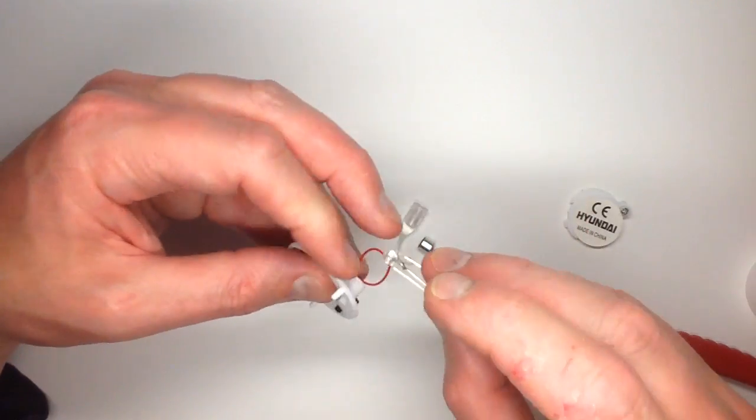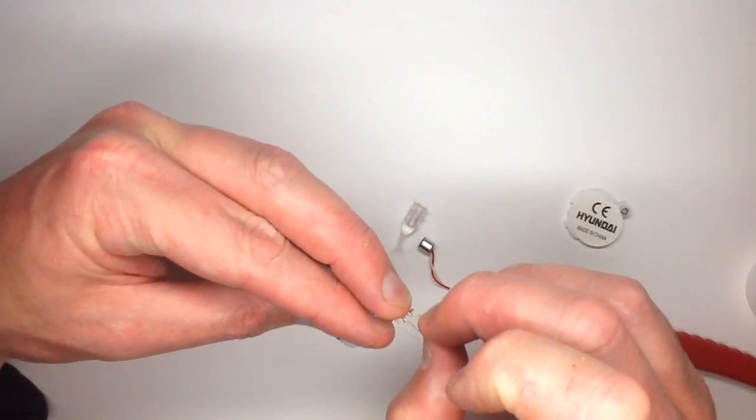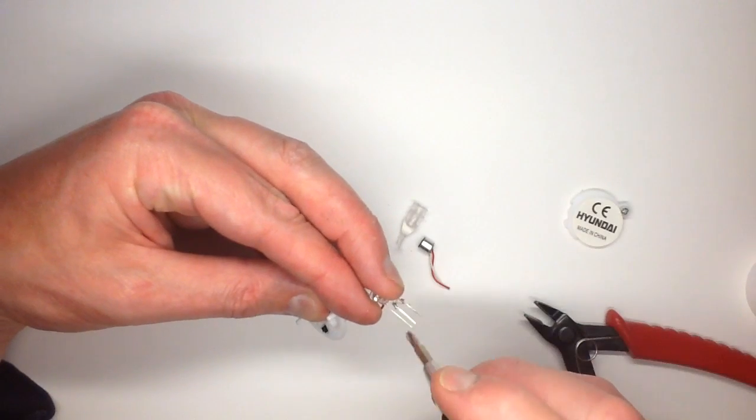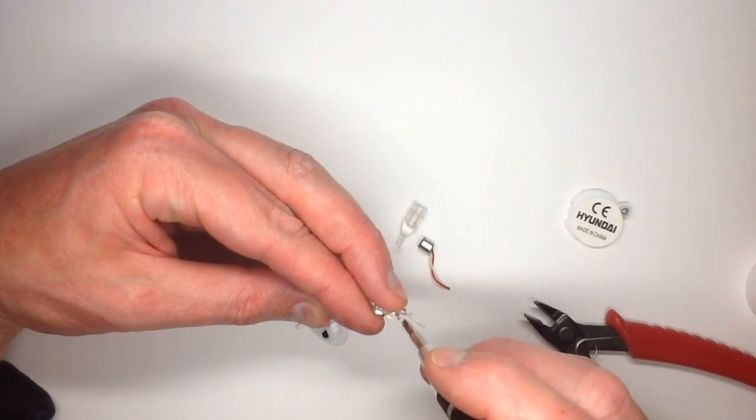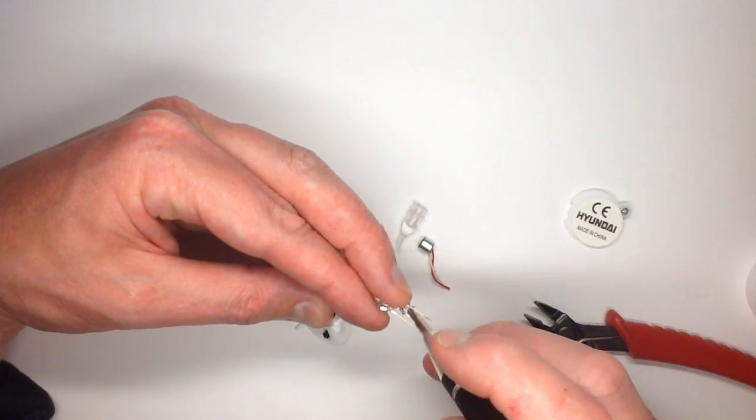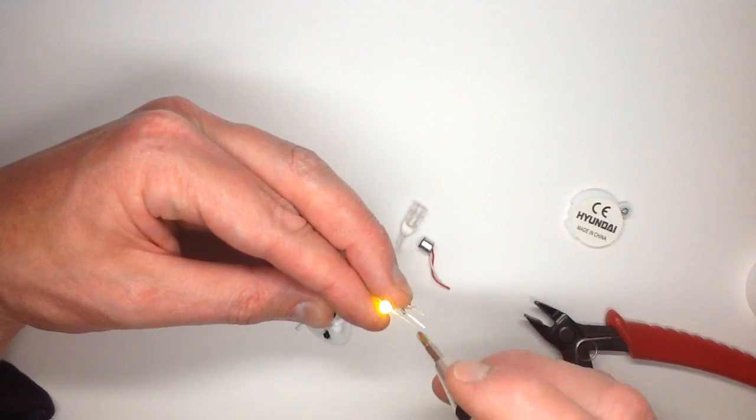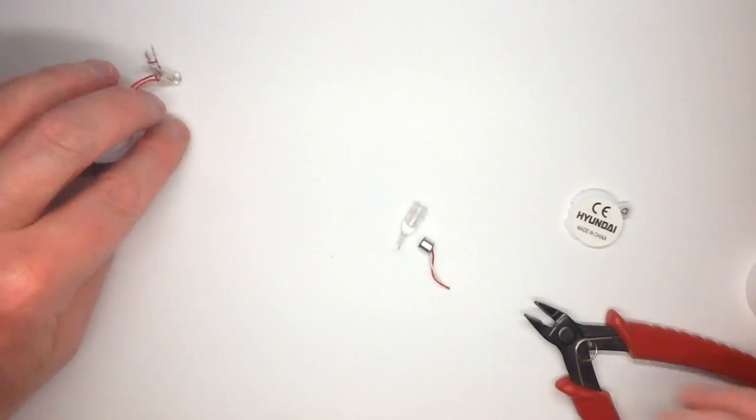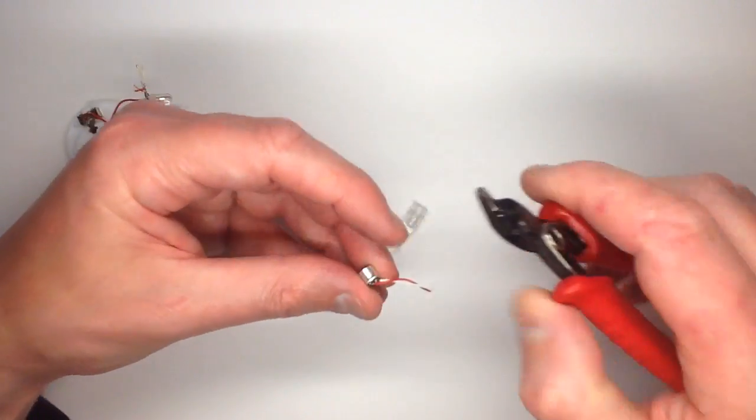And see if we can trigger it by bridging the leads. Oh, that works now I've removed that. If I bridge them out it goes on and off. OK, so let's take a look at this thing and see if it is a microphone.